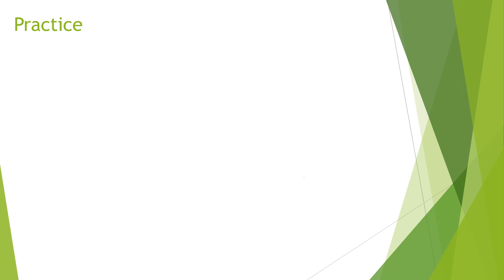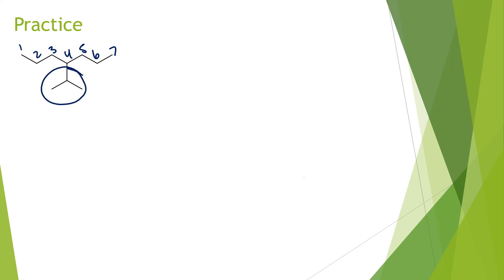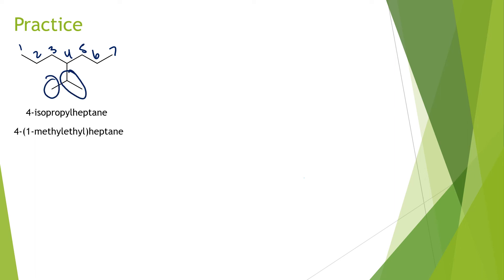Let's do some practice problems — pause after each one to solve it, then push play to watch it worked through. In the first one, the longest parent chain is seven carbons, so the parent name is heptane. The substituent is in the middle so numbering direction doesn't matter. We have a 4-isopropyl substituent, so the correct name is 4-isopropylheptane. You could also describe it as 4-(1-methylethyl)heptane, which is also a valid IUPAC name.